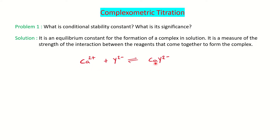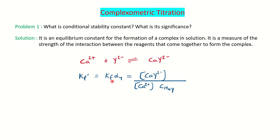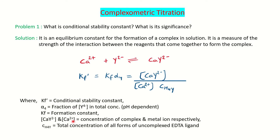The conditional stability constant is represented by Kf' (K-f prime) and is equal to Kf × α₄, where Kf is the formation constant and α₄ is the fraction of the species for the tetra-deprotonated EDTA ligand. It equals the concentration of the complex divided by the concentration of the metal ion and the total concentration of the titrant EDTA (represented as H₄Y). Since α₄ is pH-dependent and works at a single pH only, the conditional stability constant is also pH-dependent.